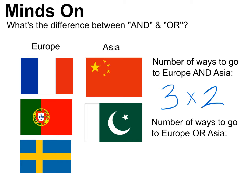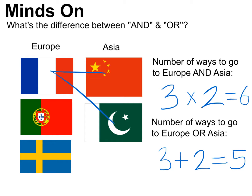Using the fundamental counting principle, you'd have three times two, which is six total ways. For example, from France you can go to China and then Pakistan, or from Portugal to both Asian countries, and so on. Now if you wanted to go to Europe OR Asia, you've got five options — three plus two. There's a fundamental difference: AND means we multiply, and OR means we add.